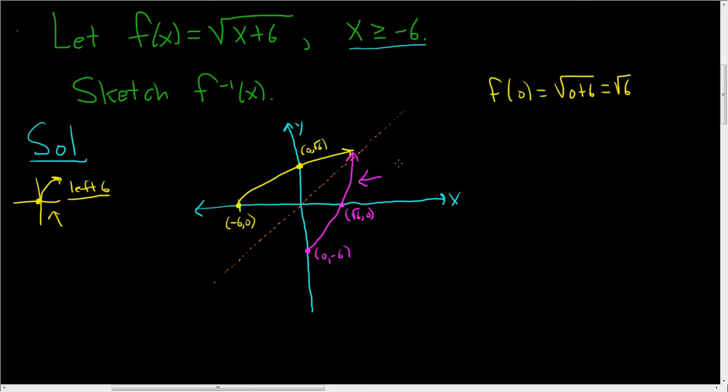So this purple line is the graph of f inverse, and the yellow line is the graph of f. We're done. That's it. I hope this helps.